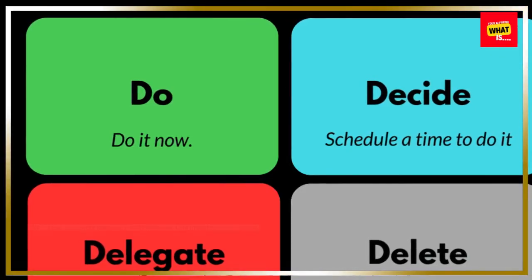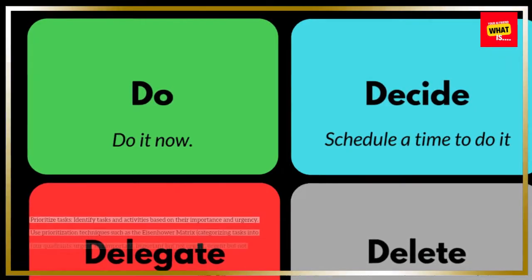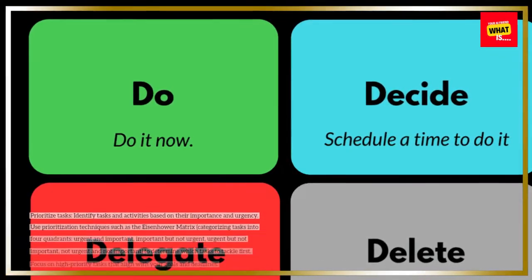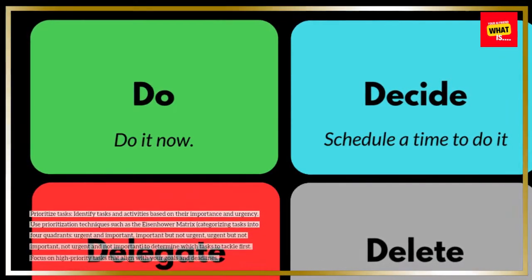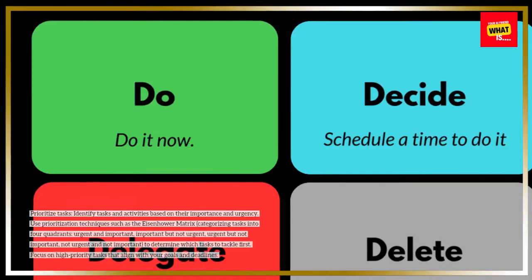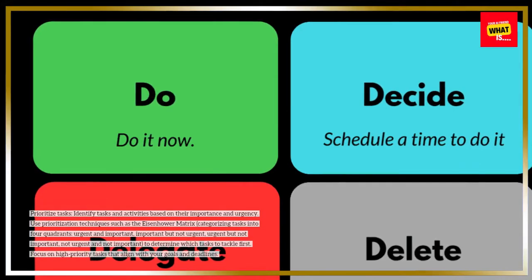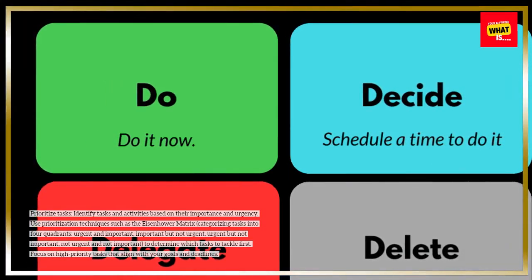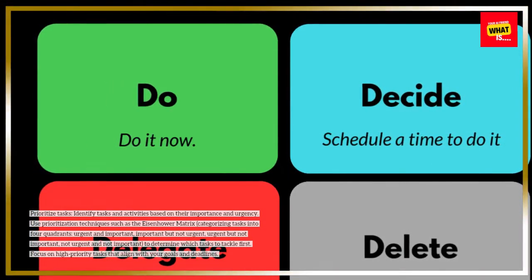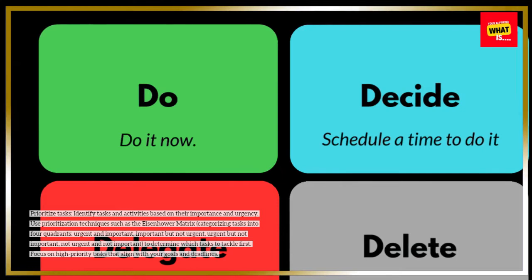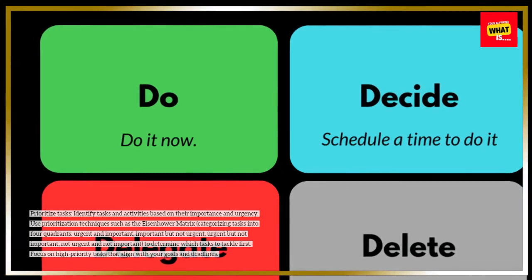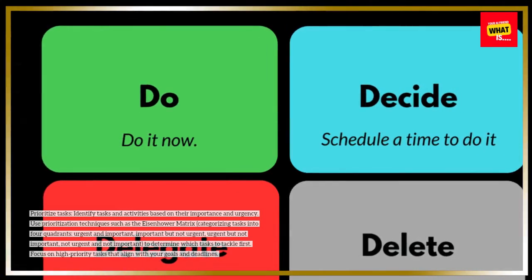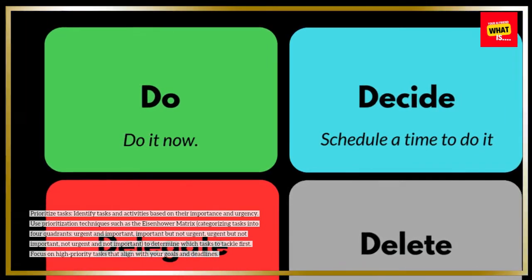Prioritize tasks. Identify tasks and activities based on their importance and urgency. Use prioritization techniques such as the Eisenhower matrix, categorizing tasks into four quadrants: urgent and important, important but not urgent,